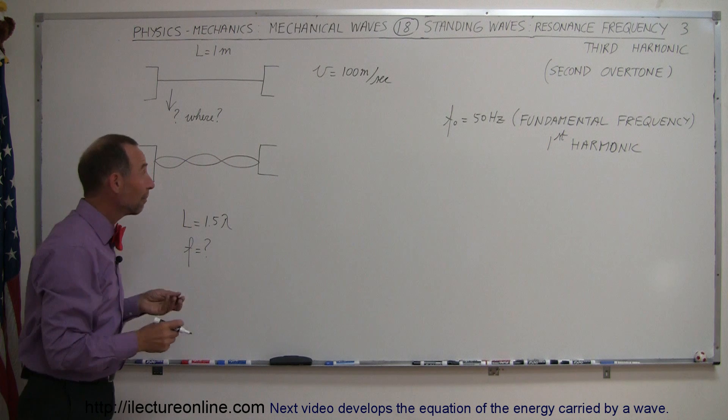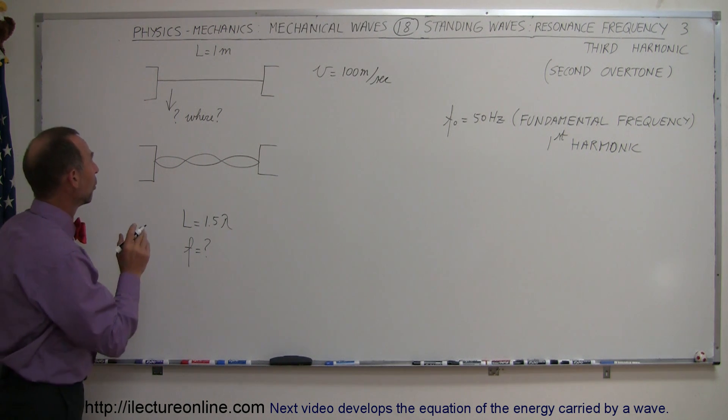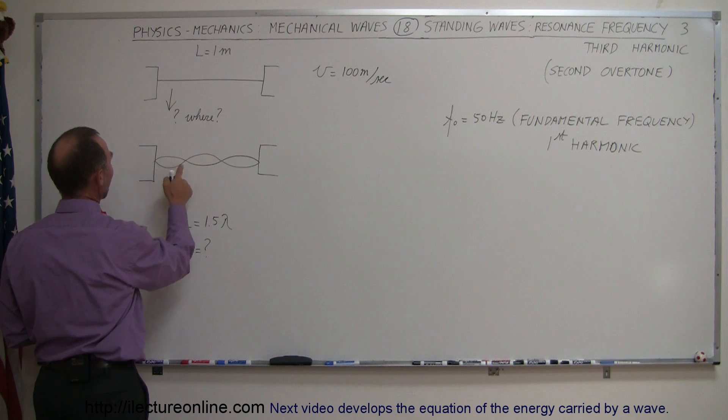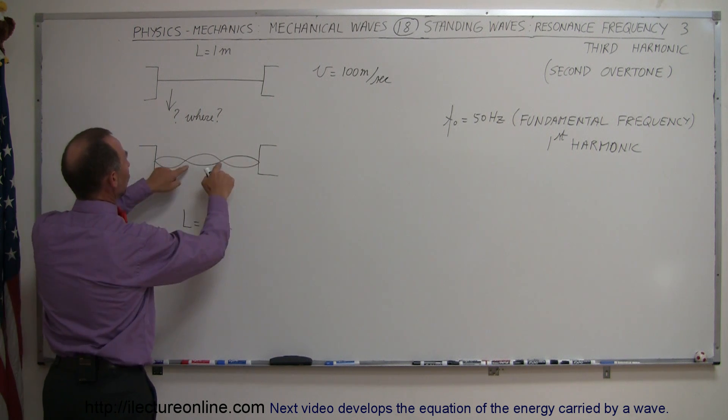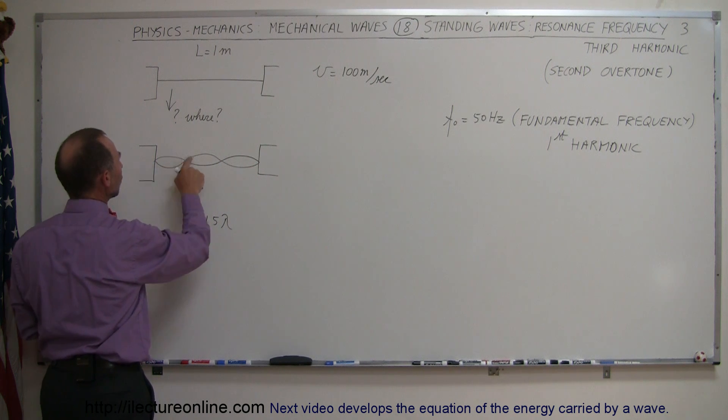So what will this pattern result in? What kind of frequency will we get? First of all, notice that we have two nodes at the end, two nodes in the middle for a total of four nodes, and three antinodes: one, two, three.